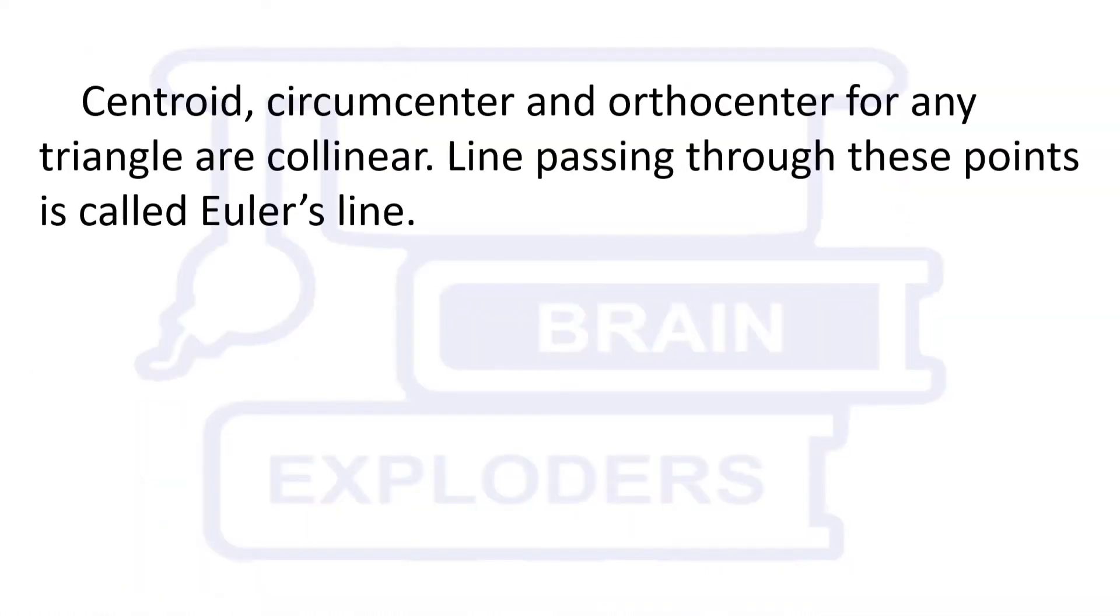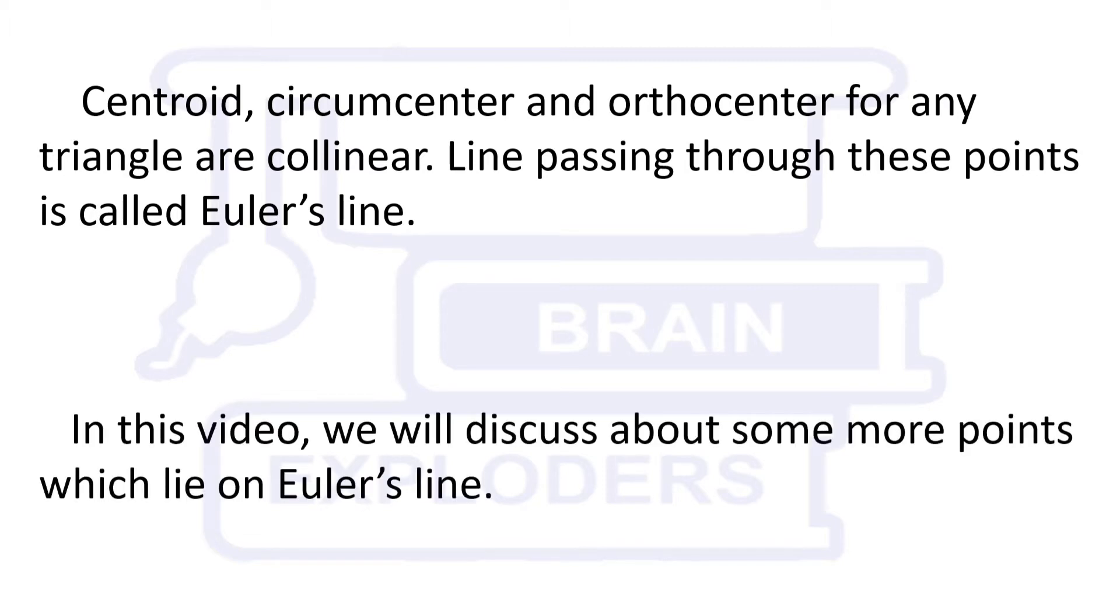Centroid, circumcenter and orthocenter for any triangle are collinear. Line passing through these points is called Euler's line. In this video, we will discuss about some more points which lie on Euler's line.